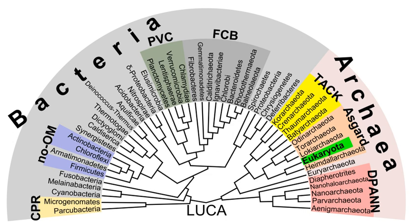Distinctive types of prokaryotes include extremophiles and methanogens, which are common in some extreme environments. The division between prokaryotes and eukaryotes was firmly established by microbiologists Roger Stanier and C. B. Van Neel in their 1962 paper "The Concept of a Bacterium," which cites Edouard Chatton's 1937 book for using those terms. One reason for this classification was so that blue-green algae would not be classified as plants but grouped with bacteria.